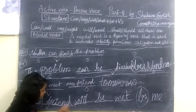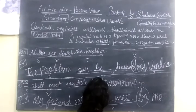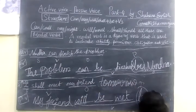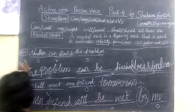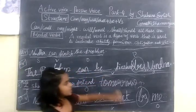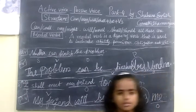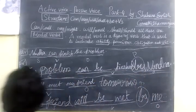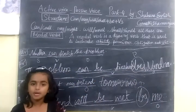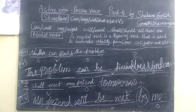In this passive sentence, 'my friends' is the subject and 'me' is the object. So the two passive sentences are: 'The problem can be finished by Nanda,' and 'My friends will be met by me.' Thank you.